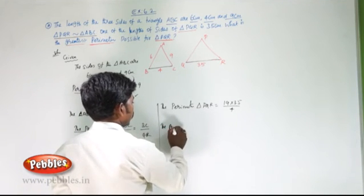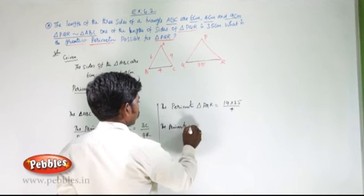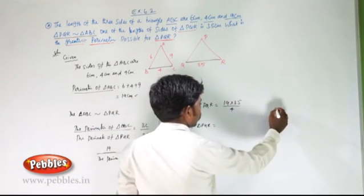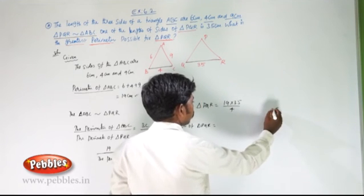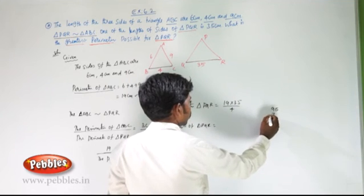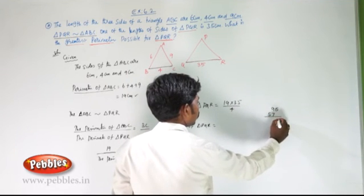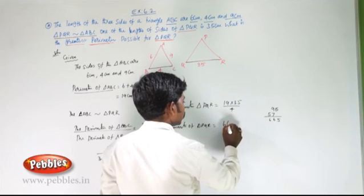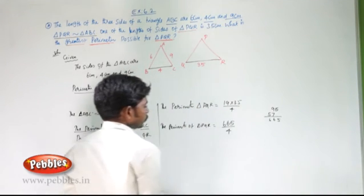So, the perimeter of triangle PQR equals... [performing calculation: 19 times 35 divided by 4]